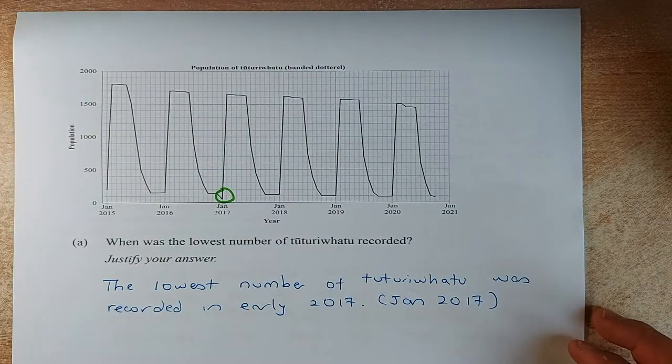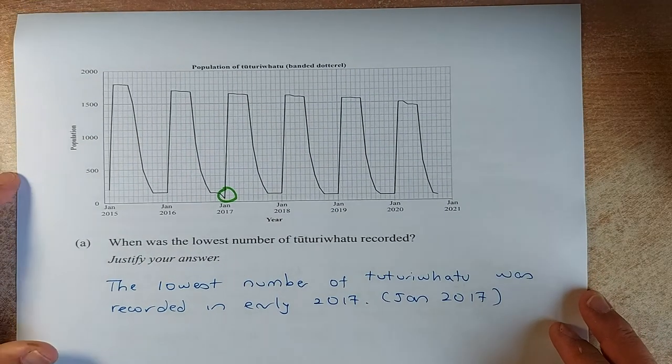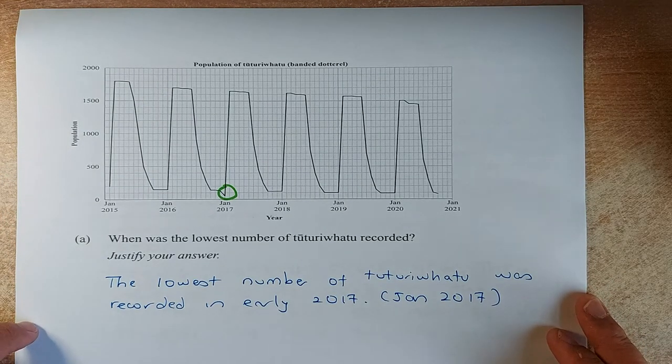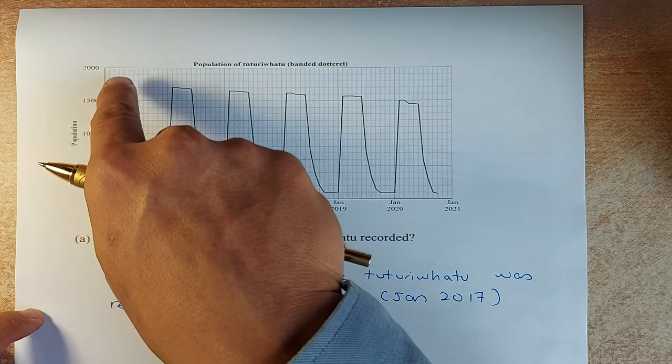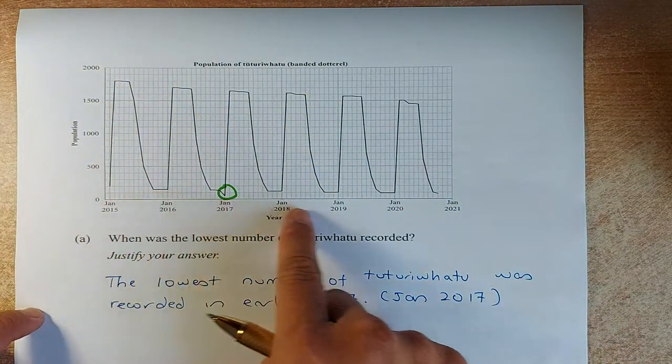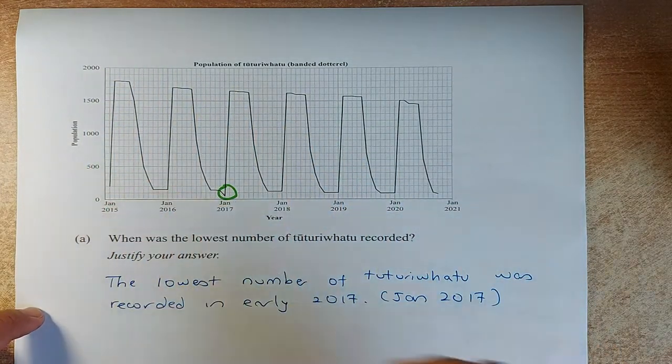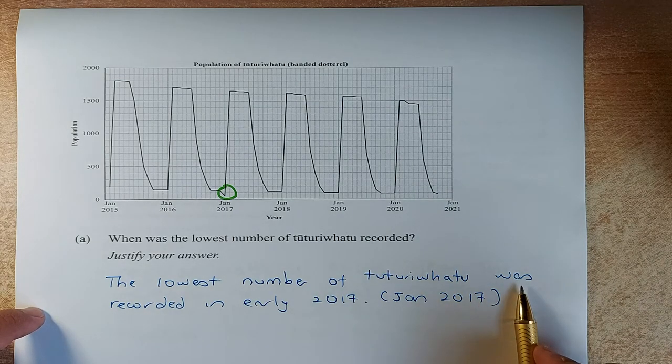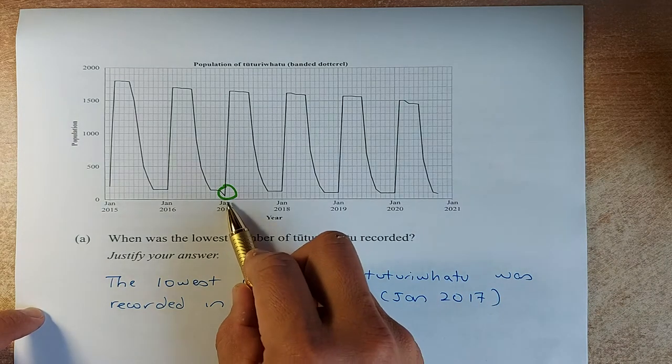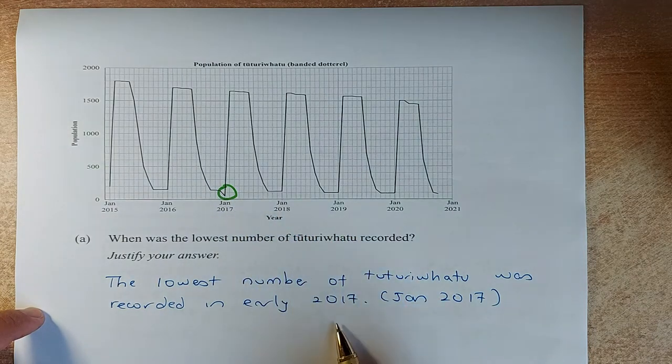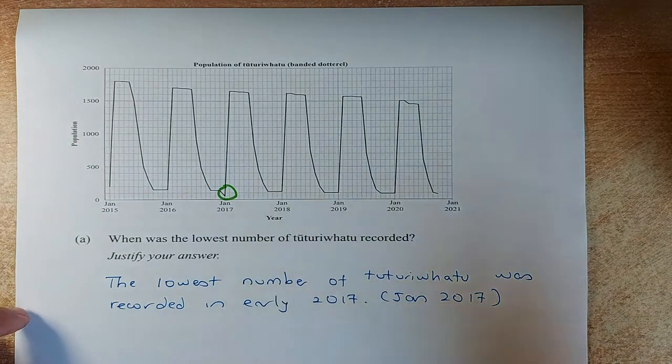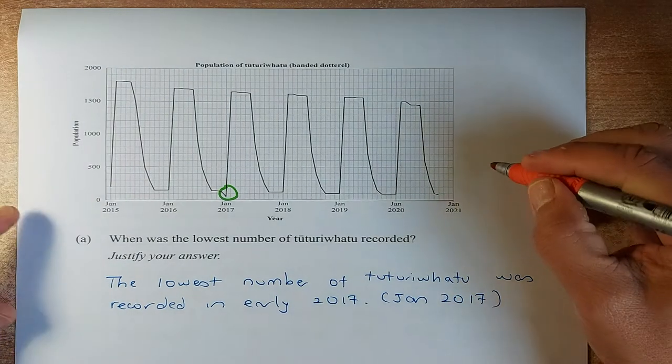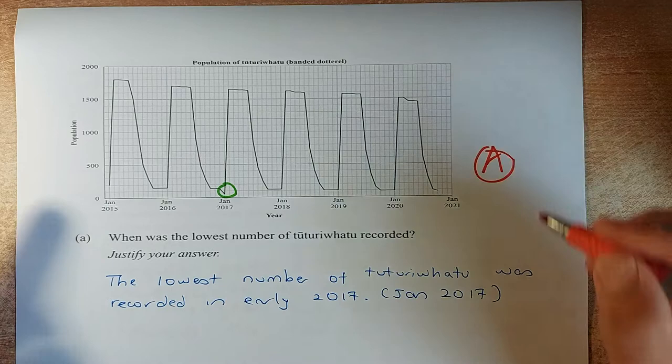The graph looks like this. The question asks you, what was the lowest number of Tuturiwhatu recorded? From the graph, you look at the highest point and the lowest point. The lowest point is the green spot there, and the lowest number of Tuturiwhatu was recorded in 2017, January 2017, early 2017. If you can get that, that will give you an easy achievement.